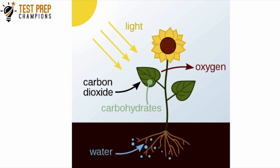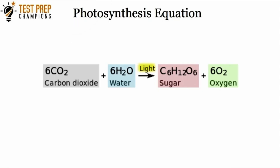Here in the diagram it says carbohydrates. Now let's look at the equation for photosynthesis — this is a common equation you're likely to see on your test. It's just showing you that carbon dioxide and water are going to react in the presence of light and they're going to make glucose and oxygen.